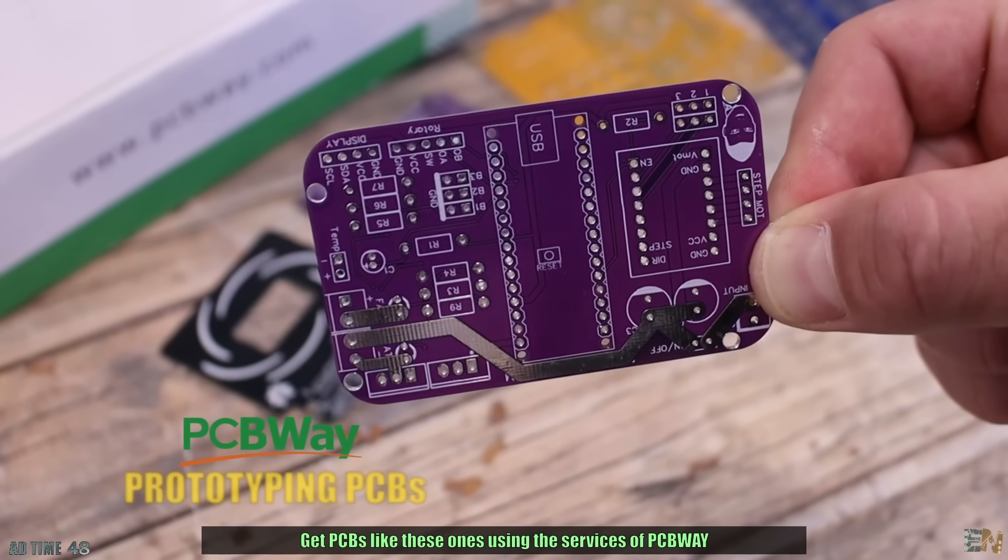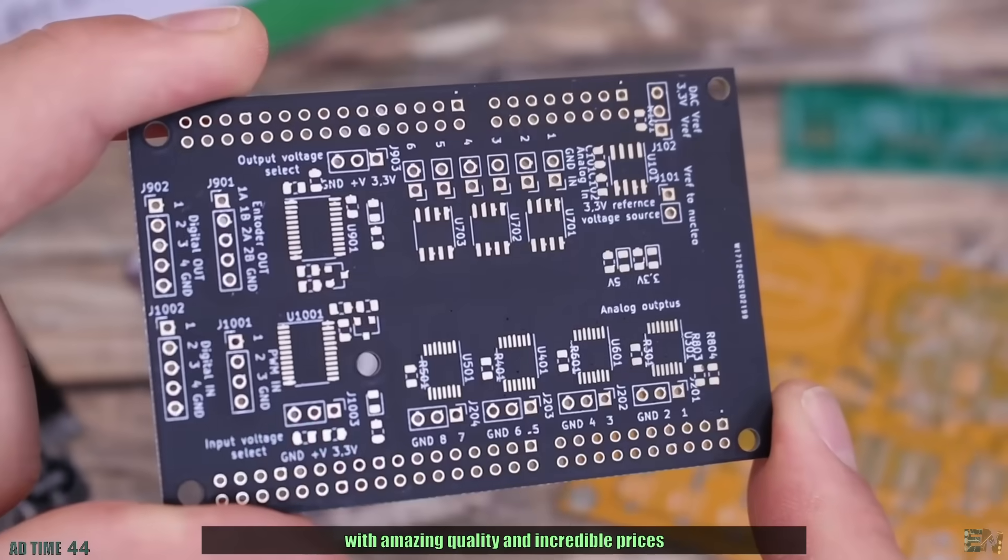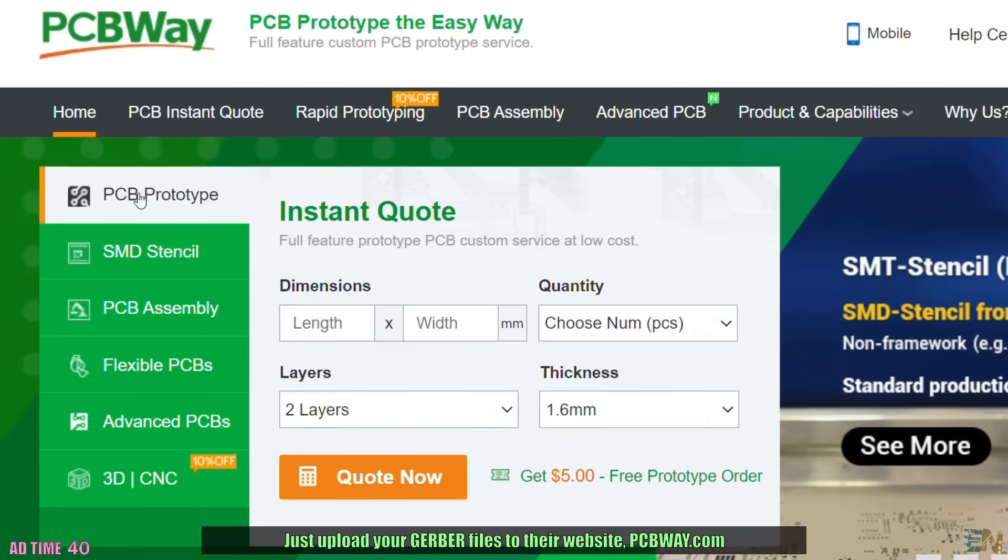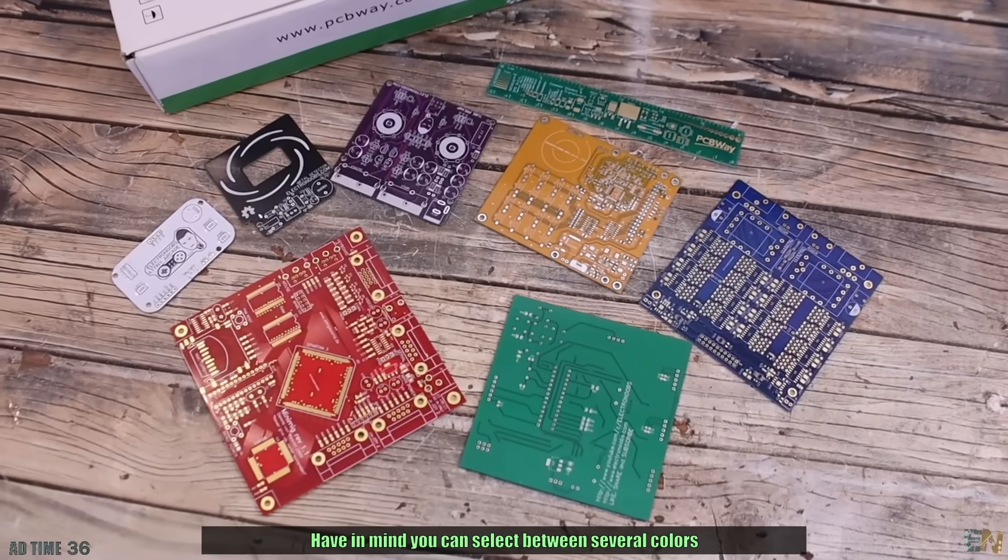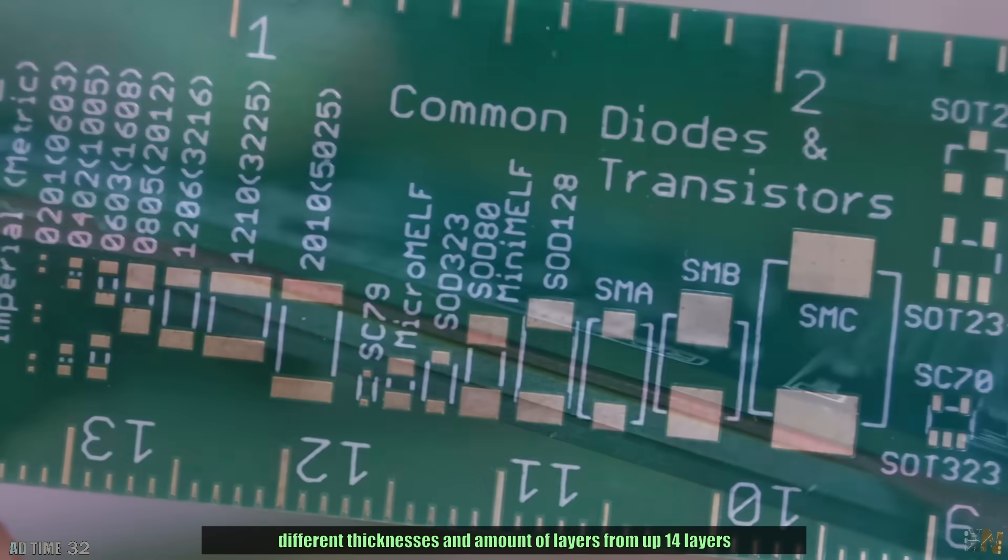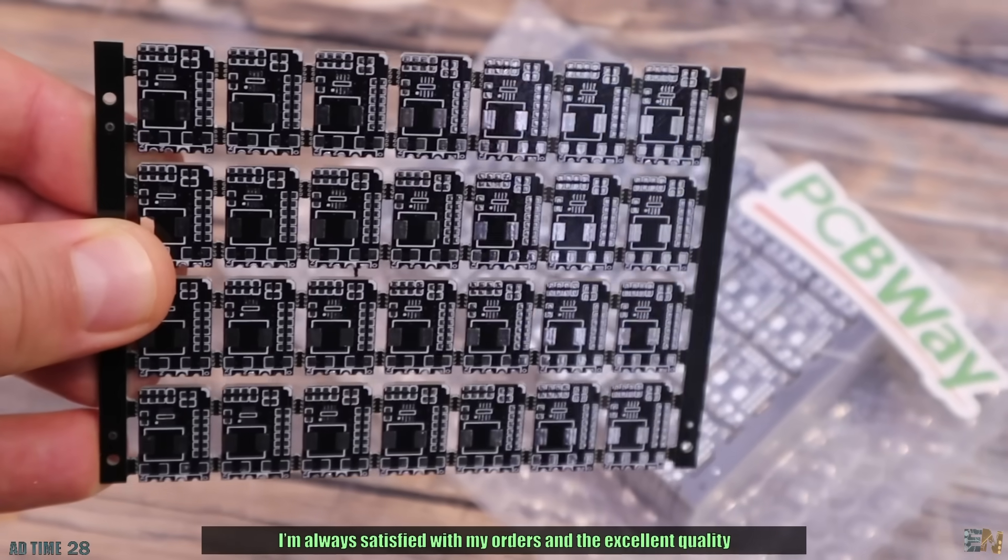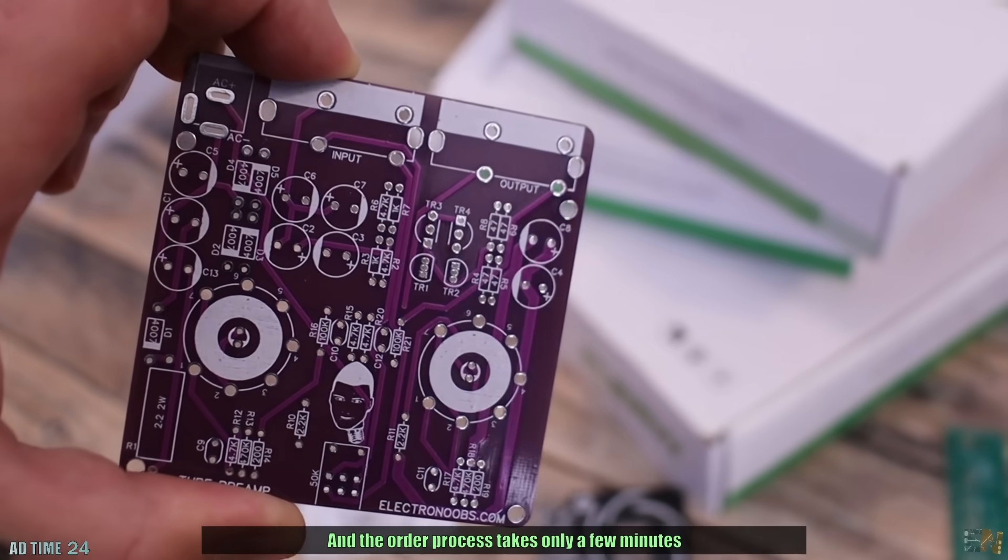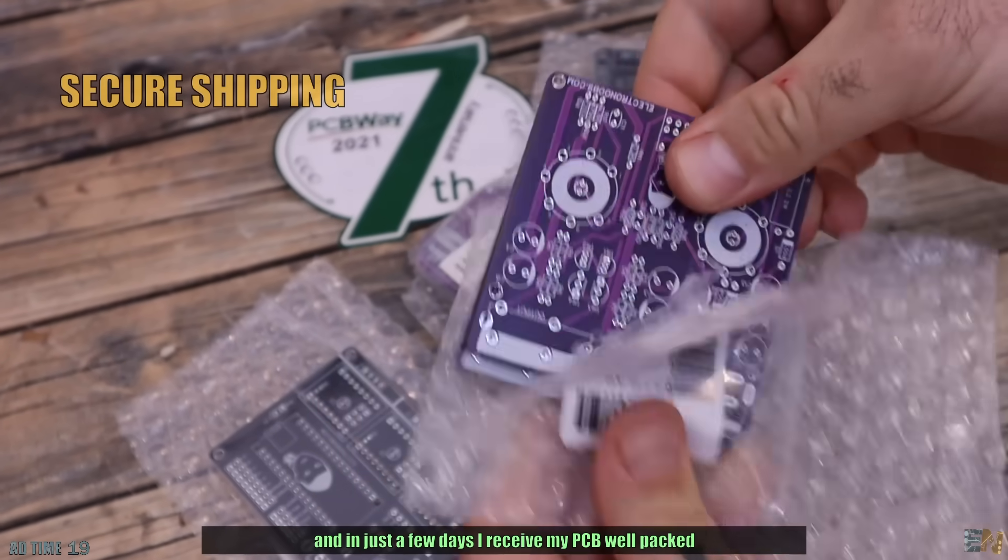Get PCBs like these ones using the services of PCBWay with amazing quality and incredible prices. Just upload your Gerber files to their website PCBWay.com. You can select between several colors, gold plated pads for better conductivity, different thicknesses and amount of layers up to 14 layers. I am always satisfied with my orders and the excellent quality. The order process takes only a few minutes and in just a few days I receive my PCBs well packed.